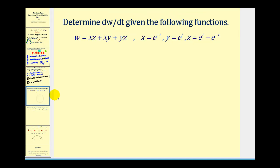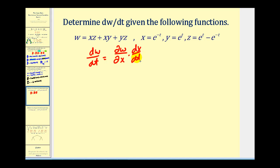Let's take a look at one more example. On this one, we have w defined in terms of three variables, and we have a single parameter for x, y, and z. So when there are additional variables, we can just extend the chain rule. We would have dw/dt equal to the partial of w with respect to x times dx/dt, plus the partial of w with respect to y times dy/dt, plus the partial derivative of w with respect to z times dz/dt.